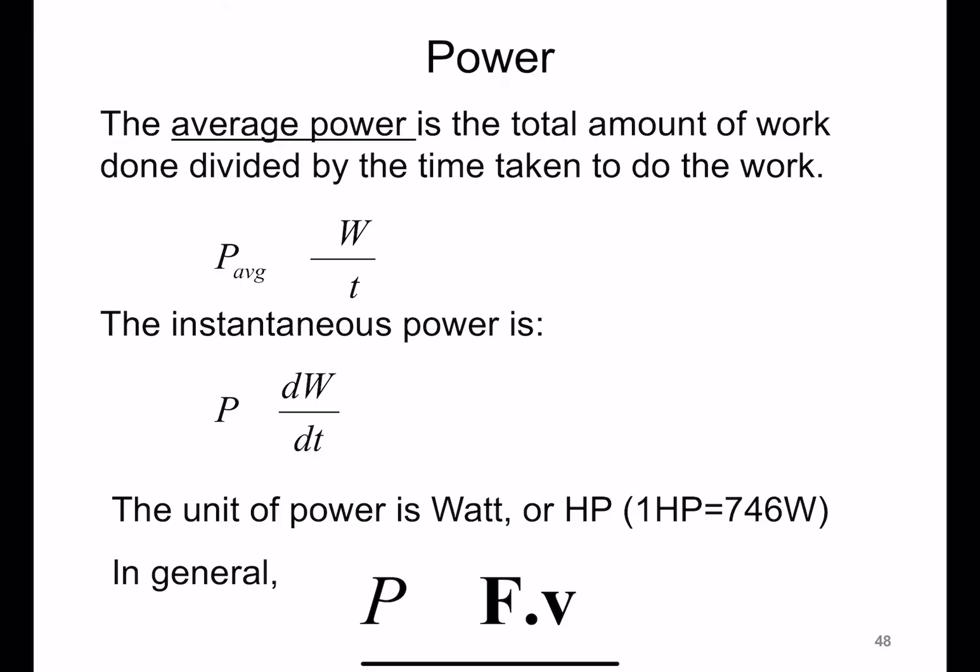You can have average power and instantaneous power. Average power is defined as the total amount of work done divided by the time it took to do that work. So if a certain agent, let's say a car engine, does an amount of work ΔW in time Δt seconds, then the average power is ΔW divided by Δt.